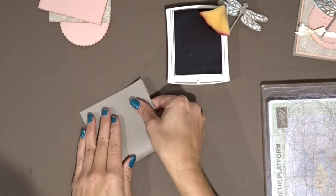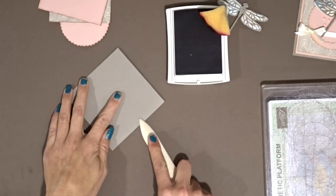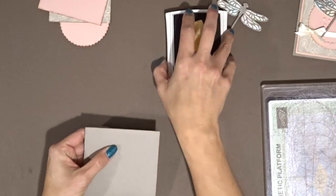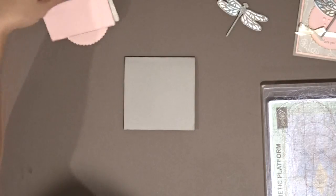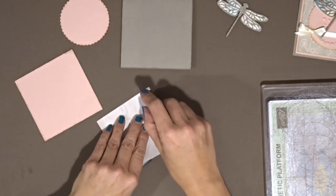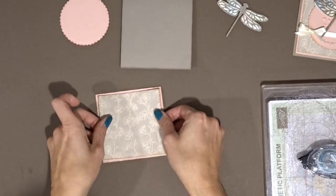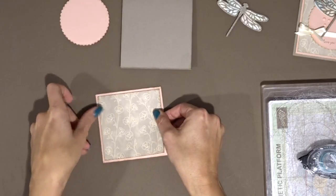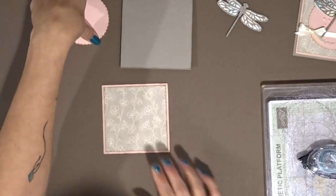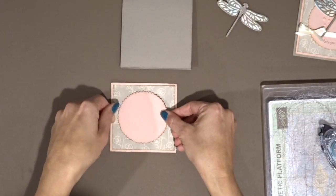So I'm going to fold this in half and just use my bone folder to get that crease. Well that didn't take too long. So I'm going to set this up here for now and then we're going to put the designer series paper on here and I'm going to put the circle on and center it.